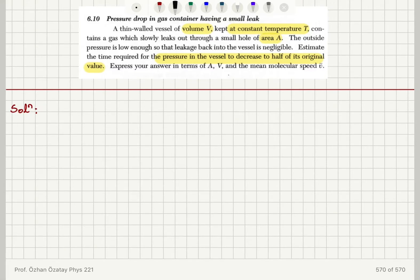We know that the particle flux is by definition the number of particles that hit a unit area in unit time. So it is 1 over A, dN dt.